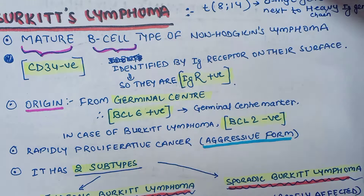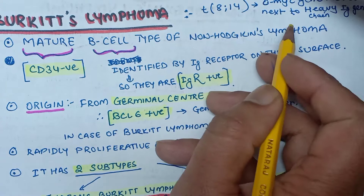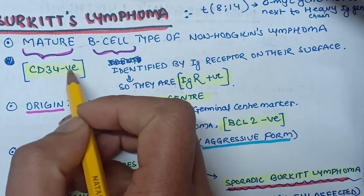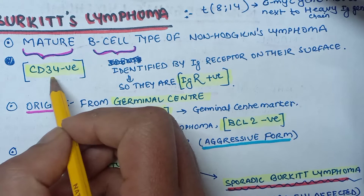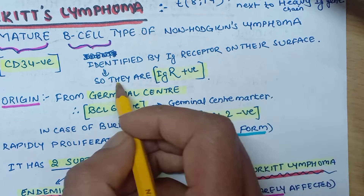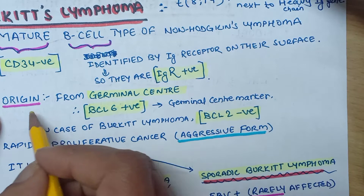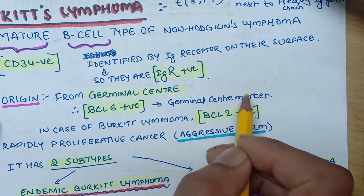Burkitt's lymphoma is a mature B-cell type of Non-Hodgkin's Lymphoma. Since it is a mature B-cell type, the CD34 marker is negative — CD34 is negative for mature B-cells and positive for immature B-cells. B-cell type is identified by immunoglobulin receptors present on their surface, so they are immunoglobulin receptor positive.